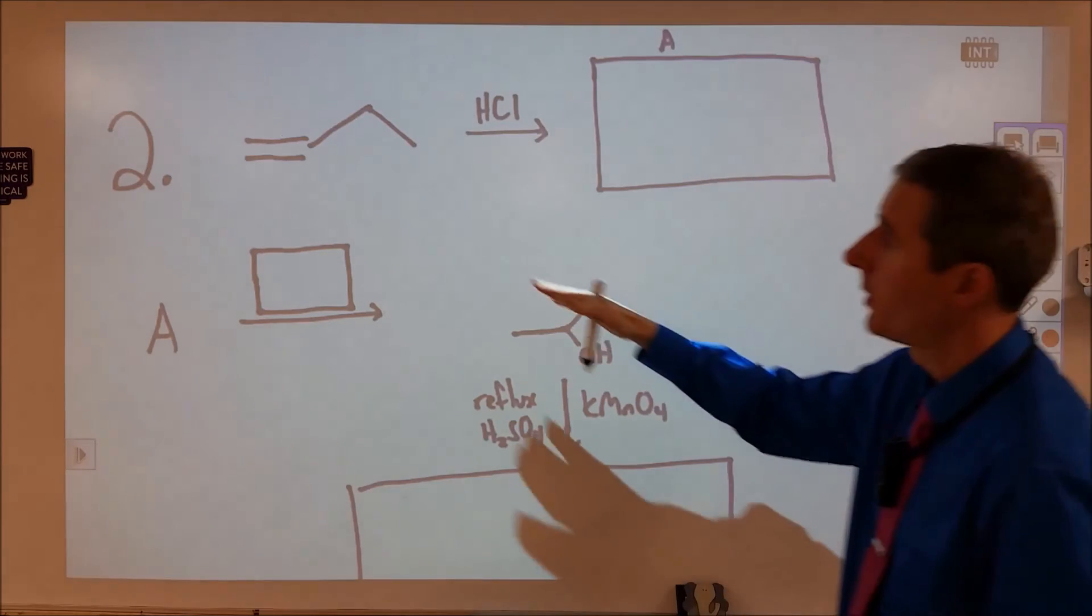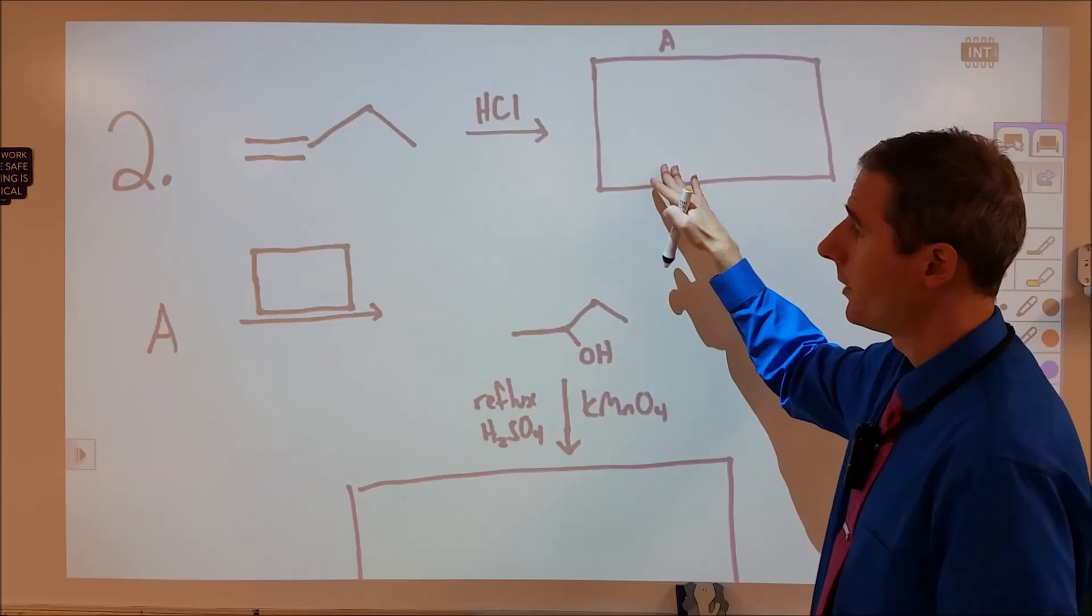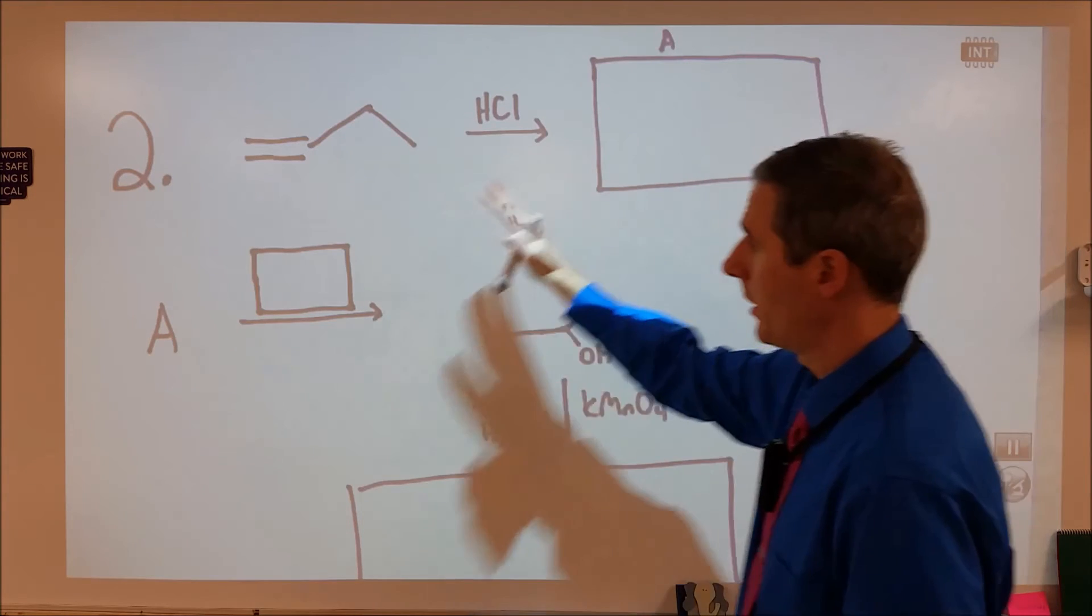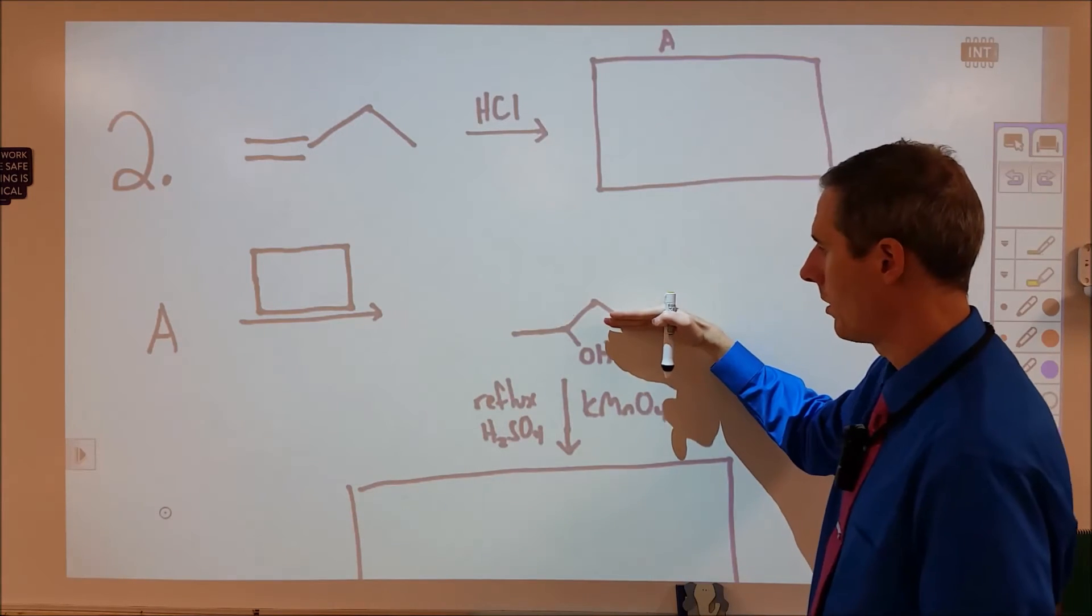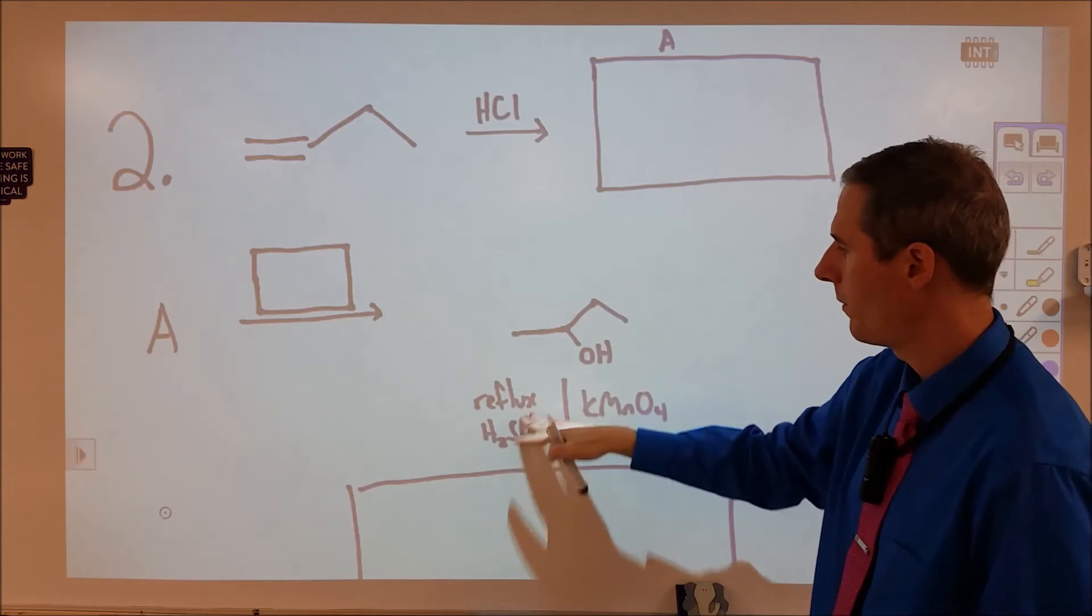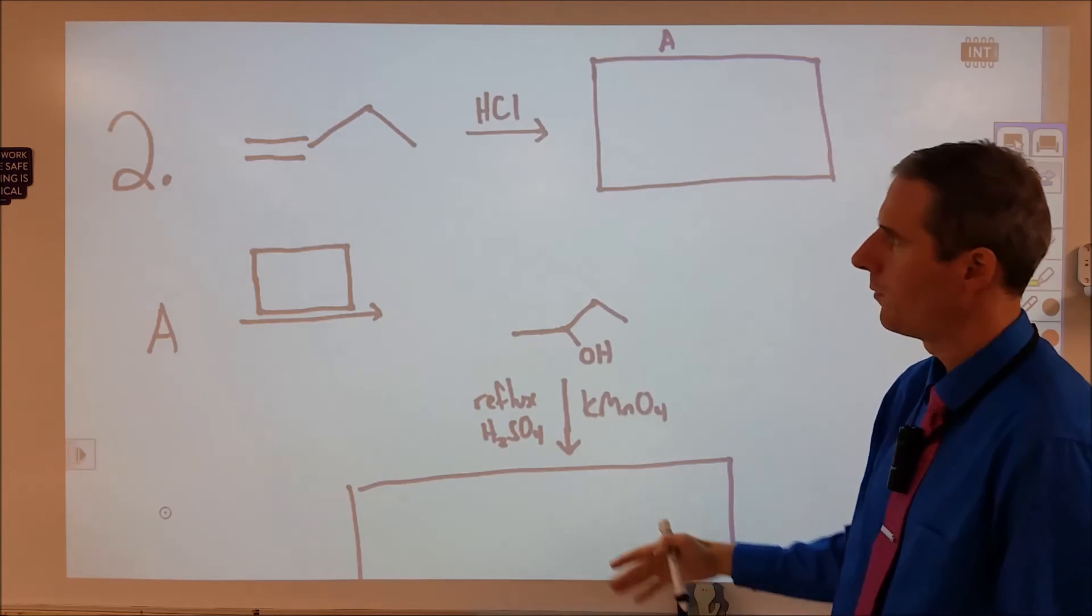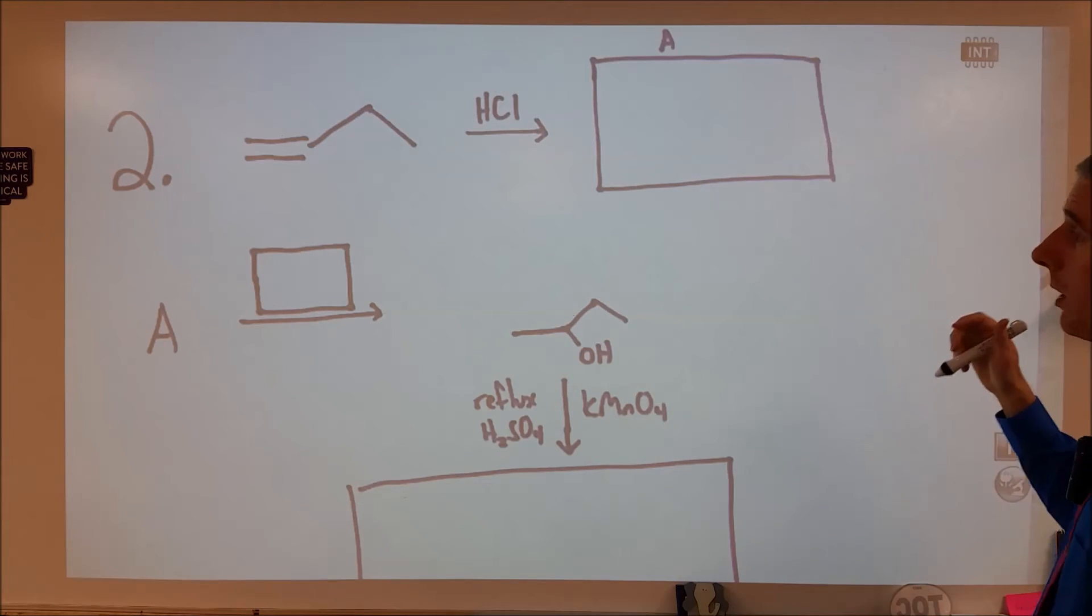Let's take a look at another question. So number two, we're starting with an alkene. We're adding hydrochloric acid to it. That's going to undergo addition reaction and form compound A. And compound A has something else added to it. It forms an alcohol. And the alcohol has potassium permanganate added, reflux, and acid catalyst. It forms a new compound. So this one is a little more straightforward. We're just going to kind of look at what we start with and what we add to it for the most part.